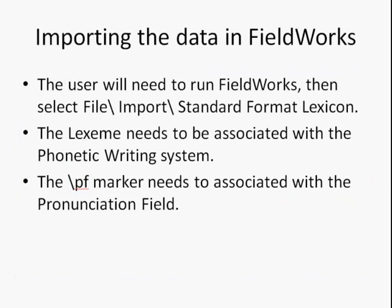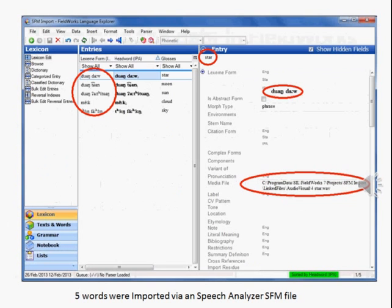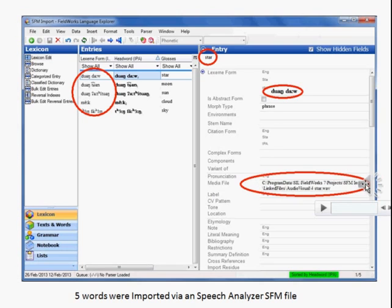Once that's done, the result is the words are in the lexicon, the gloss is noted at the top, and then the lexeme — which in this case is phonetic — and the link to the audio file. That's the end of this presentation.